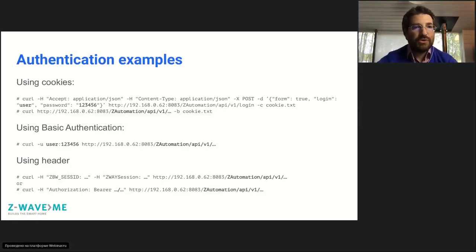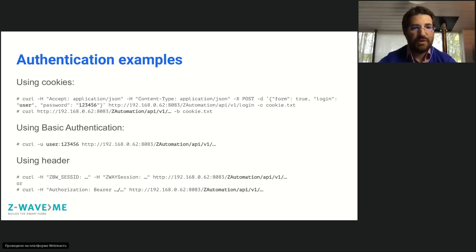All that is discussed in the Z-Way manual, chapter 13. Here are a few examples of how to use cookies, basic authentication, and headers — for example with the curl command line — with username, token, and URL highlighted in bold. All this is specified in the documentation, and you can copy-paste everything you need from this presentation.